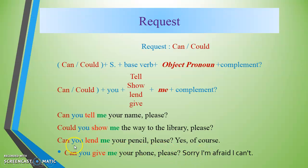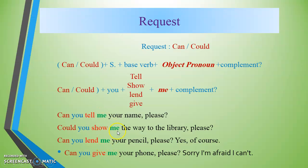Now let's look at direct and indirect objects. A verb can take two objects: a direct object and an indirect object. The indirect object usually refers to a person, and the direct object refers to a thing.